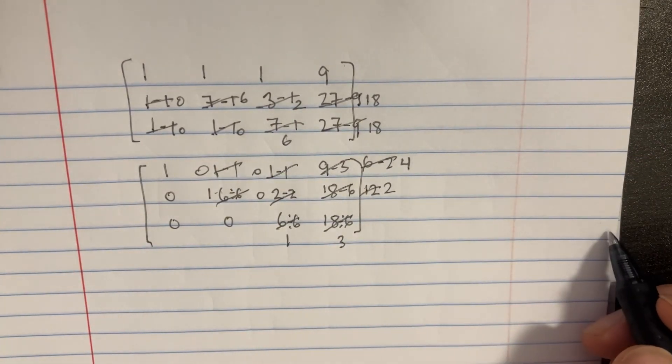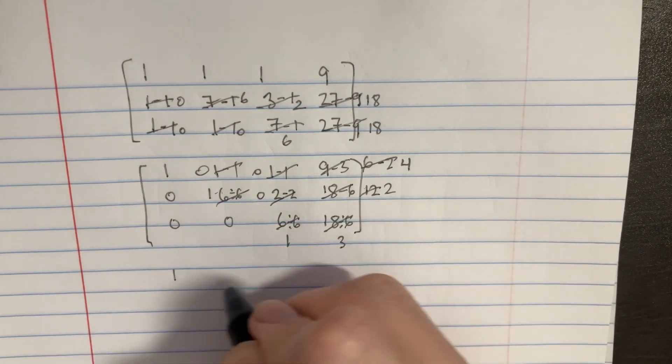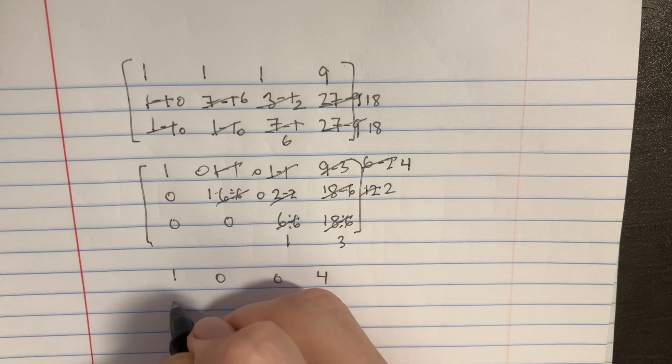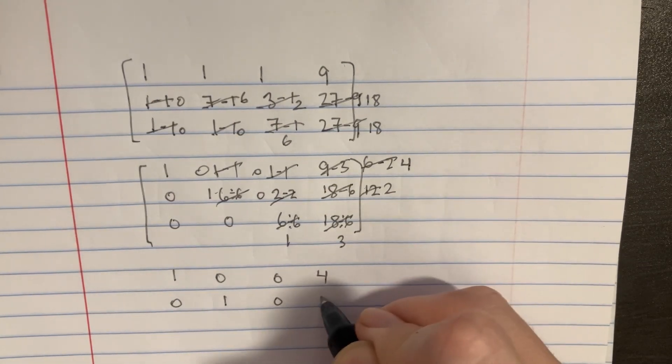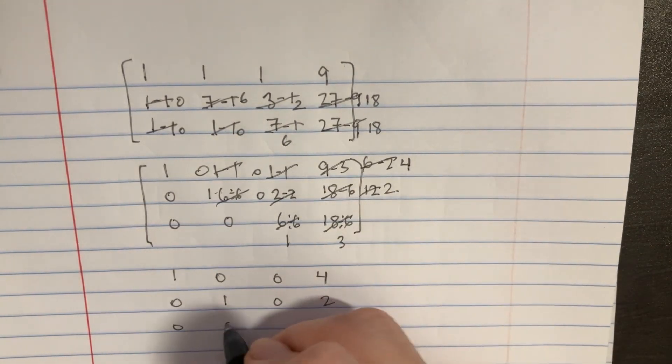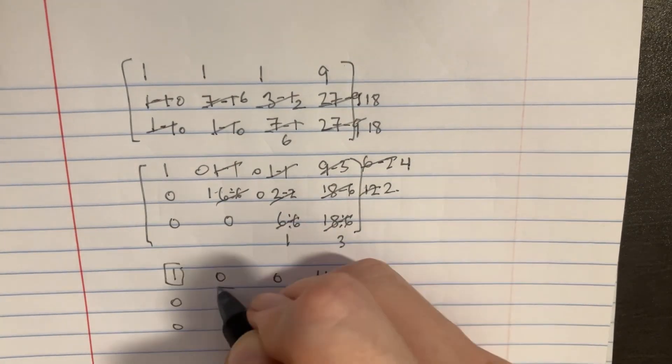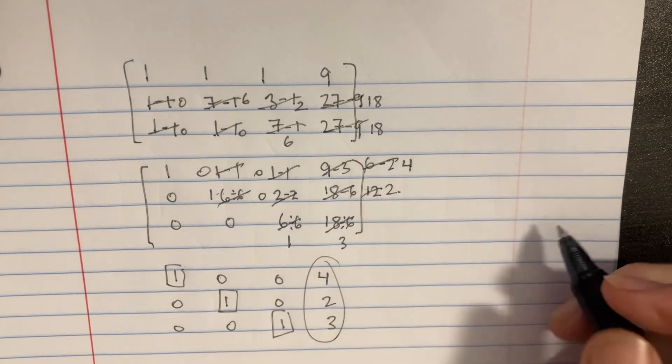Let's see if we can rewrite that one more time. That's just going to be 1, 0, 0, 4. And then 0, 1, 0, 2. 0, 0, 1, 3. And we should have our 3 answers. Bam. Giving us this coordinate: 4, 2, and 3.